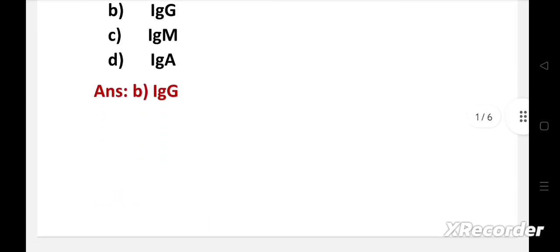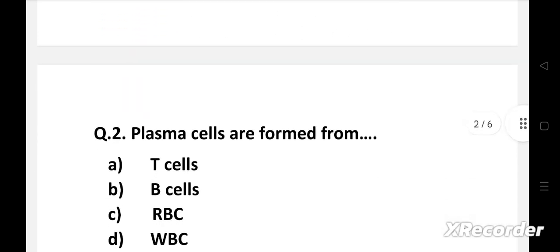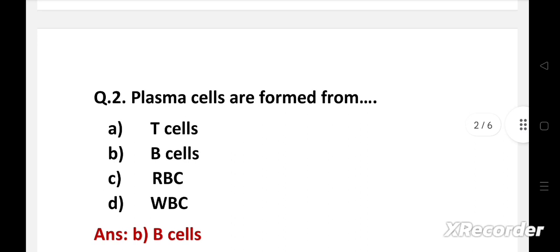Next question. Plasma cells are formed from: Option A T cells, B B cells, C RBC, D WBC. Right answer is Option B, B cells. Plasma cells are developed from B cells. It is a type of white blood cell that secretes immunoglobulin or antibodies. These cells play a significant role in the adaptive immune response.